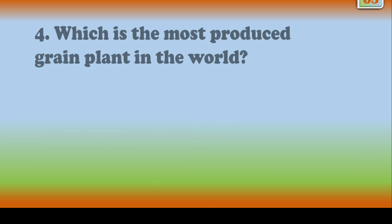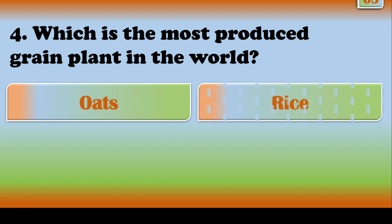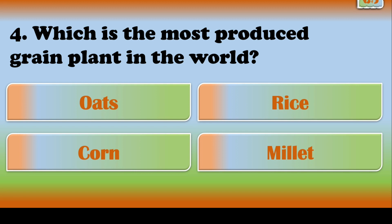Which is the most produced green plant in the world? The most produced green plant in the world is corn.